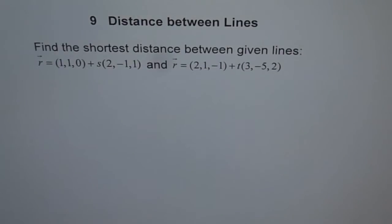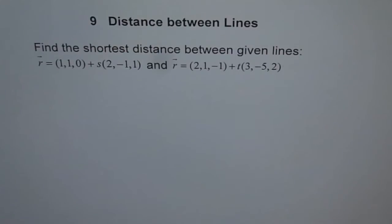Chapter 9: Distance between lines. Find the shortest distance between the given lines: R equals 1, 1, 0 plus S times (2, minus 1, 1) and R equals 2, 1, minus 1 plus T times (3, minus 5, 2).